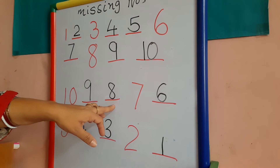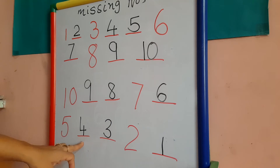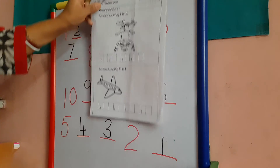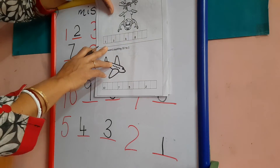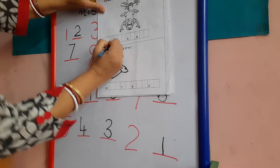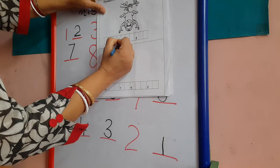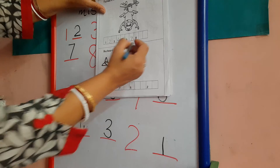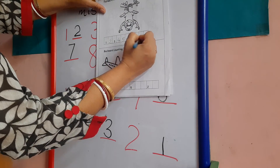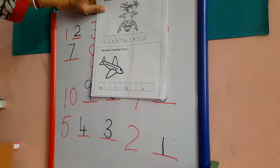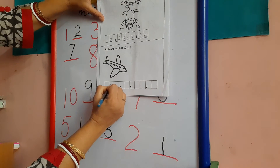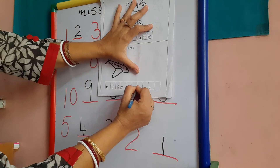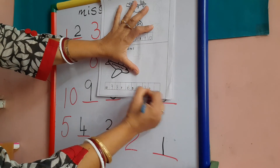Backward counting: 10, 9, 8, 7, 6, 5, 4, 3, 2, 1. Now we will do this. Reference sheet. See: after 1 it is 2, 3 ke baad 4, 5, after 6 is number 7, then 8, after 8 is 9, and 10. And backward counting: 10, 9, 8, 7, 6, 5, 4, 3, 2, and 1.